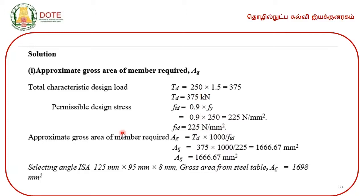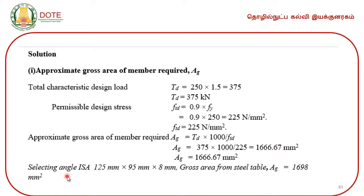From the design load and permissible design stress, we calculate the approximate gross area required. Area = load / stress — from the basic definition stress = load / area. So gross area required = (375 × 1000) / 225 = 1666.67 millimeter square. With this approximate area we refer to the steel table.